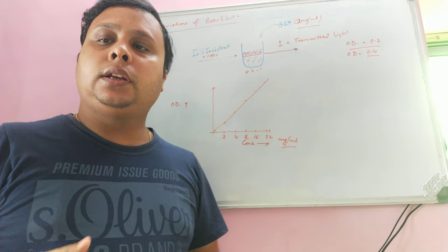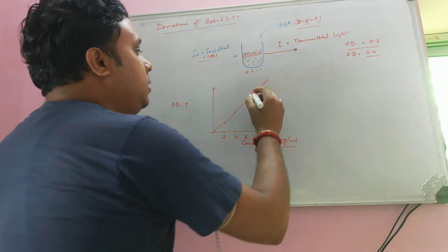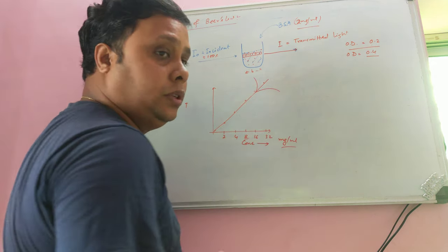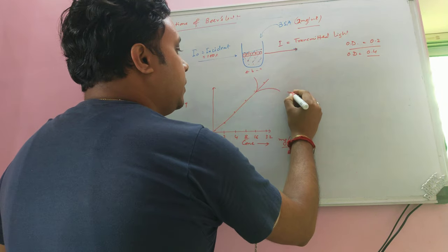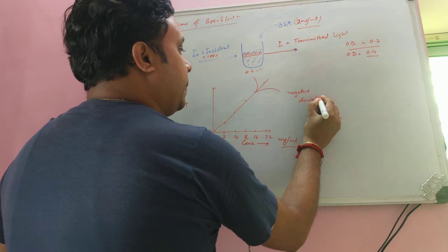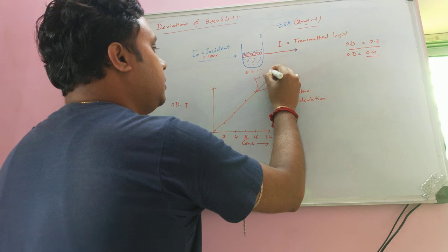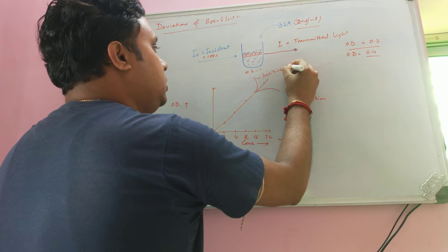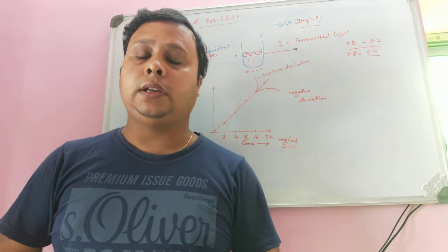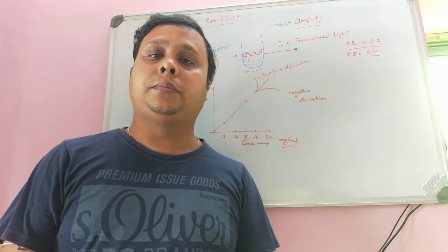In practice, the curve can move in either direction. If the curve moves downward, it is called a negative deviation. If the curve moves upward, it is called a positive deviation. This is why understanding the deviations of Lambert-Beer's Law is important.